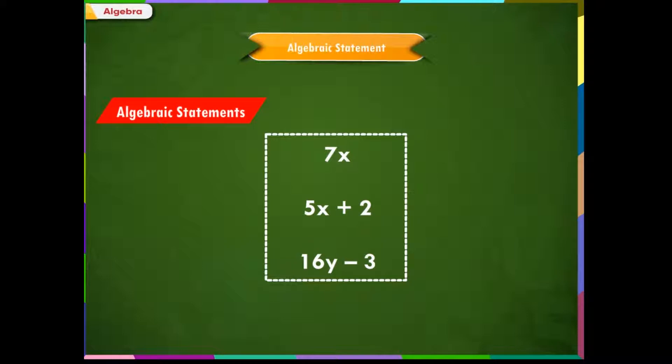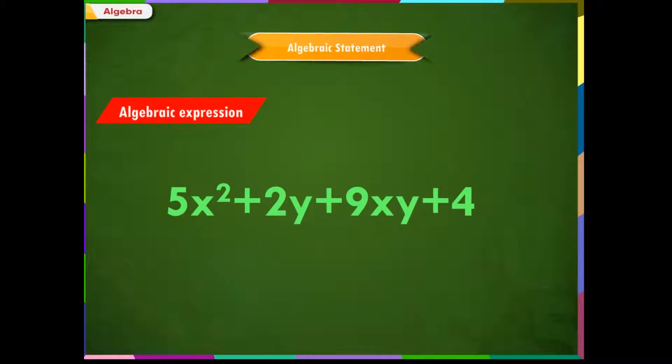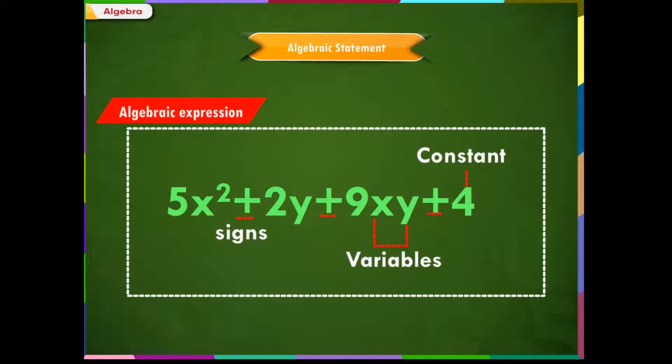Similarly, let us consider some other type of examples: 7X, 5X plus 2, 16Y minus 3. We see here that these statements can be a single term or group of terms with plus and minus sign, and each statement has a variable. Such statements are called algebraic statements or algebraic expressions. An algebraic statement is a statement consisting of variables, constants and signs.